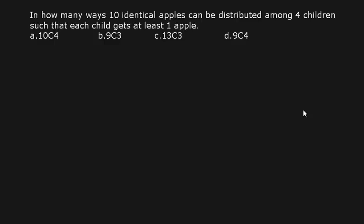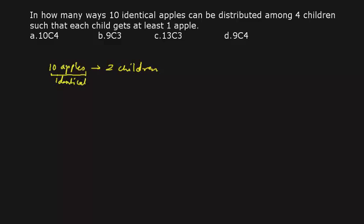The question given to us is: we have 10 identical apples and we have to distribute them among four children such that each child must get one apple. I'll solve this question later — first I'll give you a basic idea about solving such questions. Suppose we have 10 apples and we want to distribute them among two children only. The key thing to remember is that the 10 apples are all identical, so we can't distinguish between them. Unlike the main question, in this simplified case a child can get all the apples.